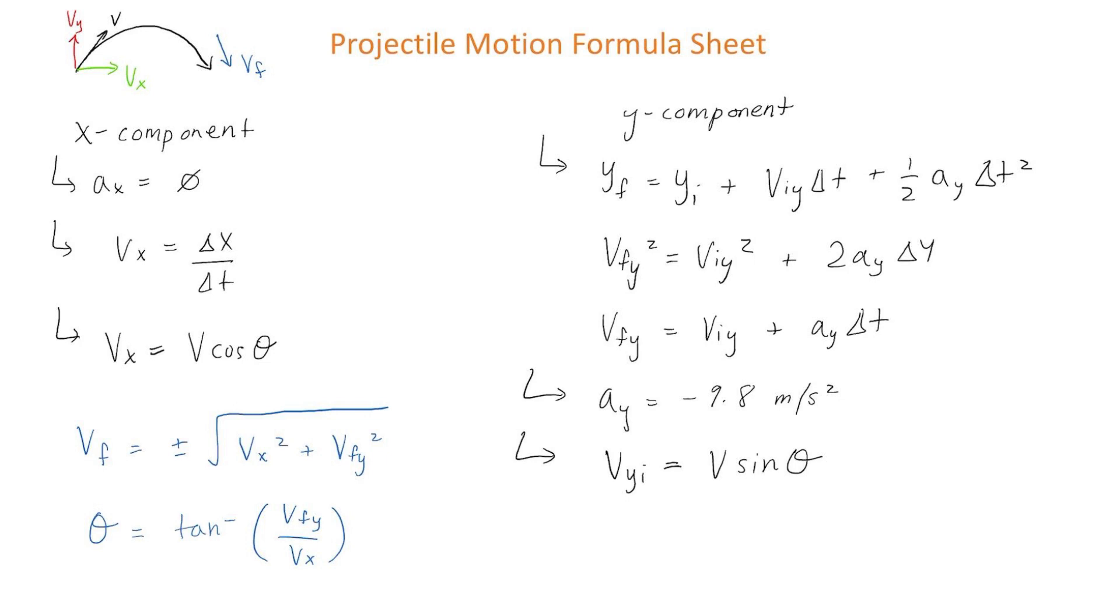If you are asked to find the final velocity, you have to use this equation, which says that vf is equal to the square root of vx squared plus vfy squared.